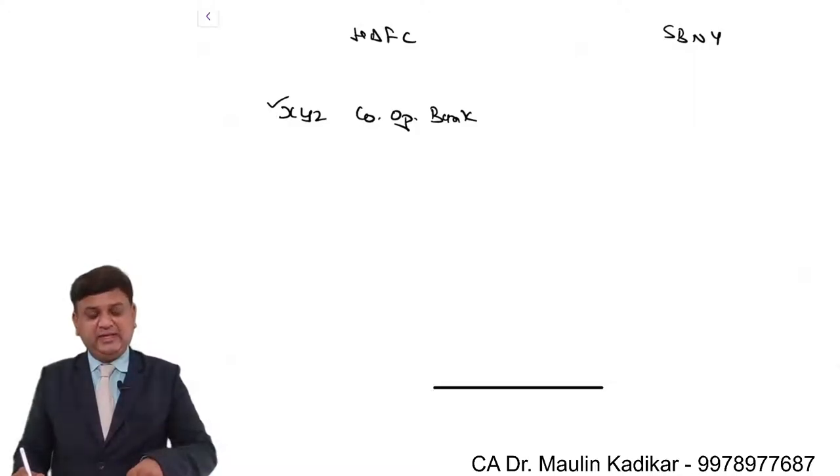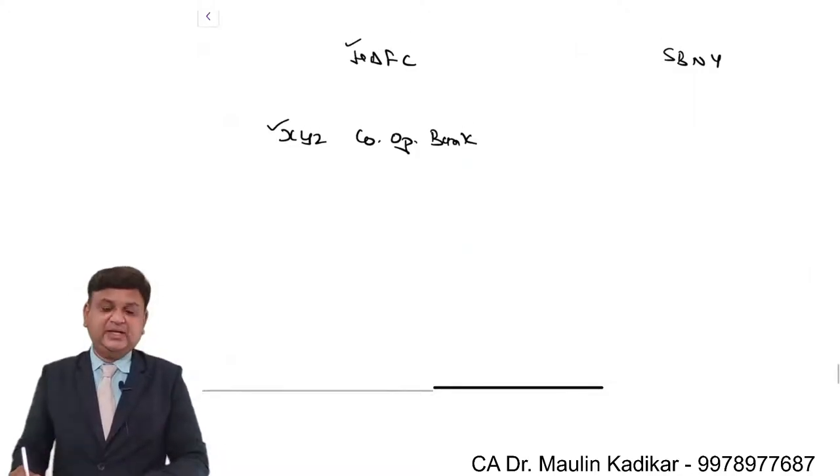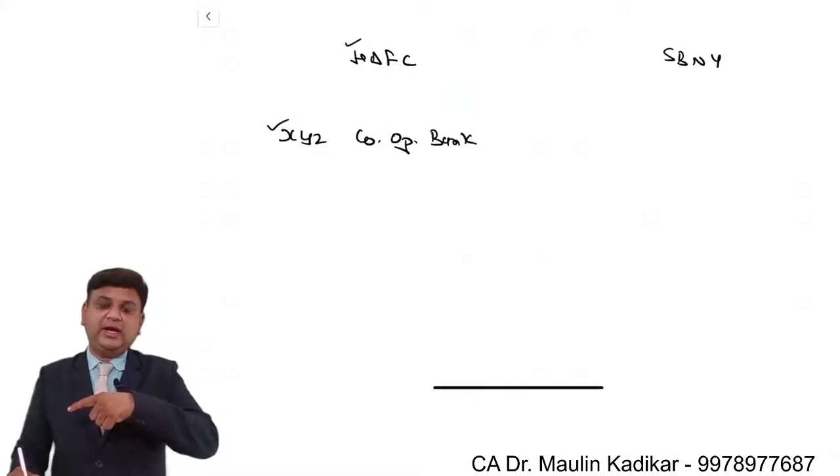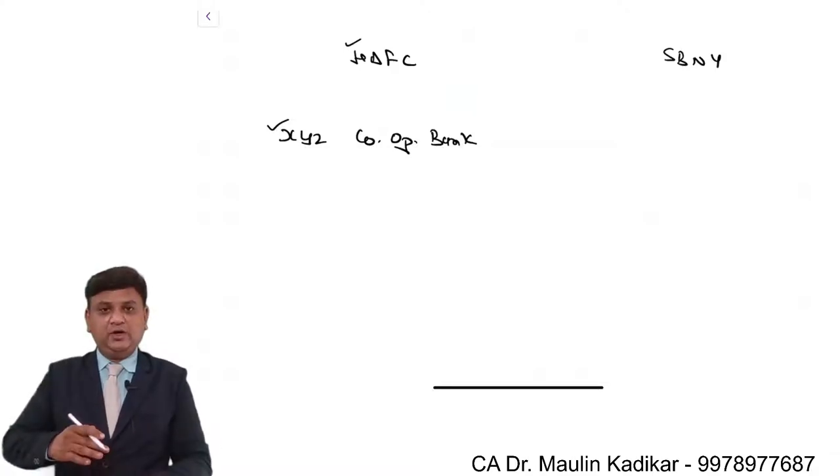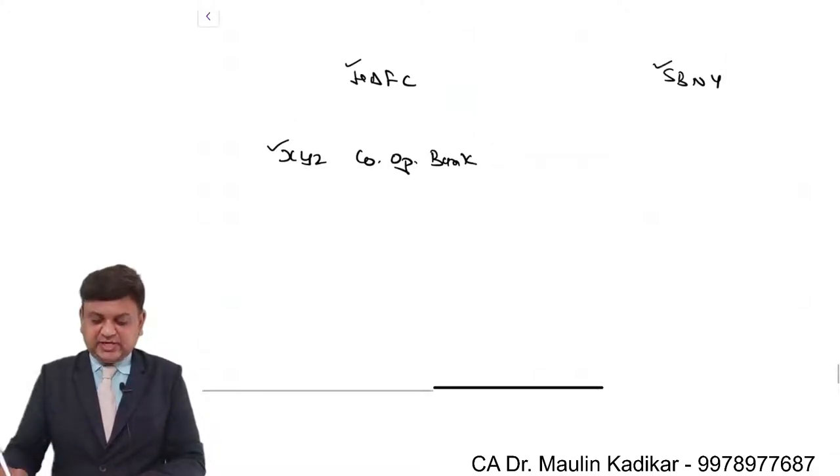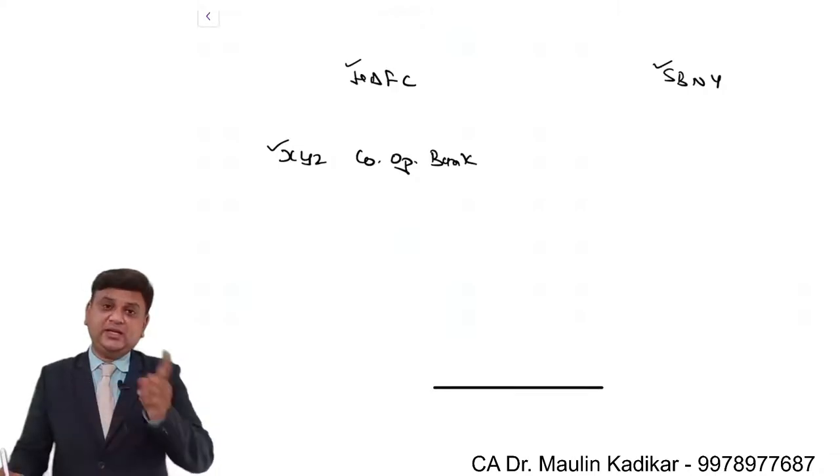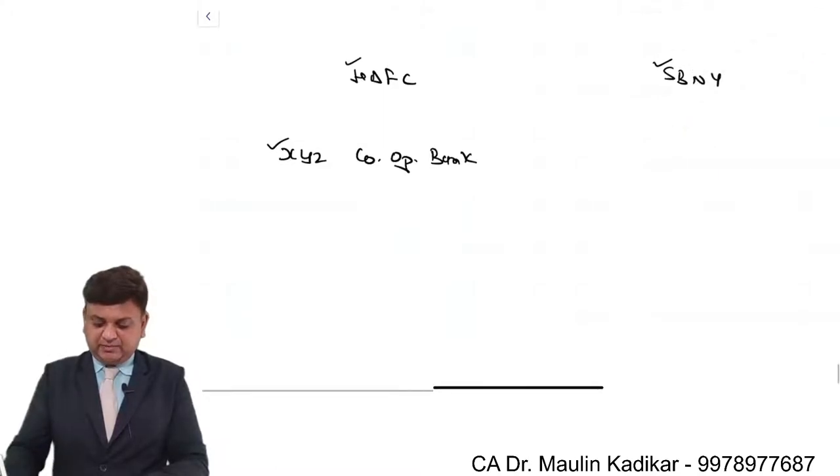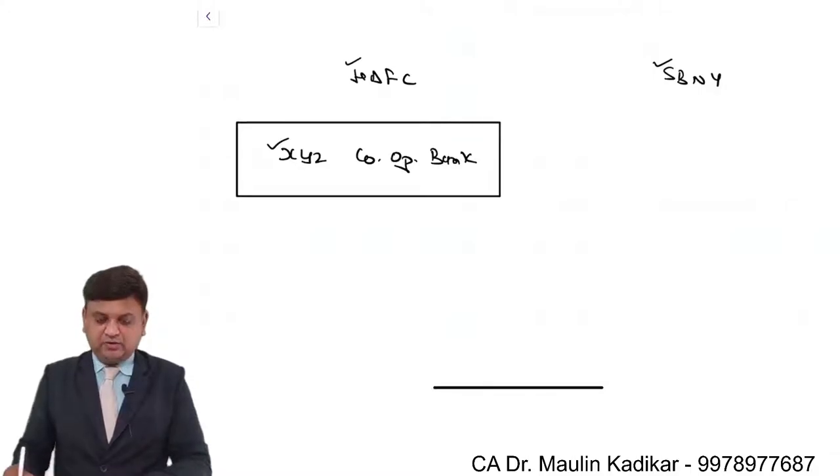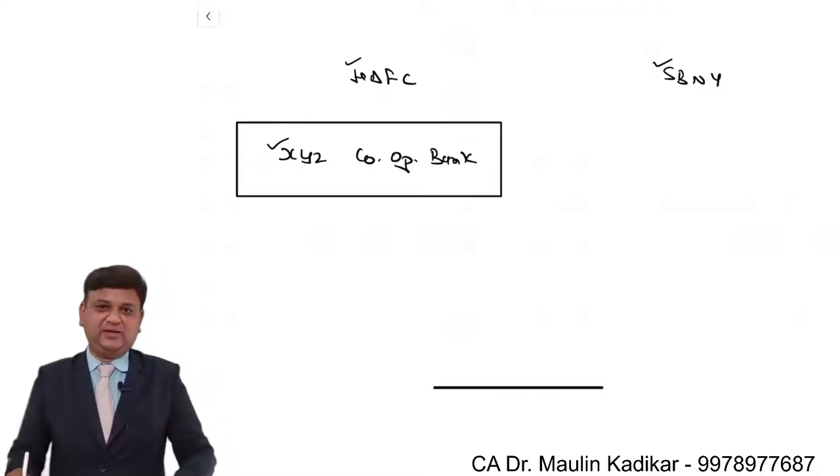XYZ bank may tell HDFC bank that one of our customers wants to sell dollar and purchase rupees. We want to operate your State Bank of New York Nostro account for entering into this transaction. This transaction entered upon by XYZ cooperative bank is considered to be the Loro account for XYZ cooperative bank.